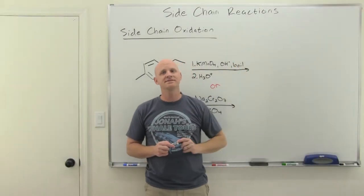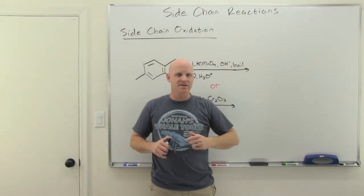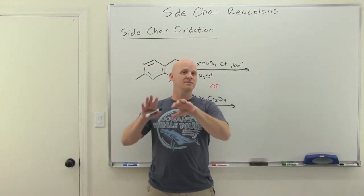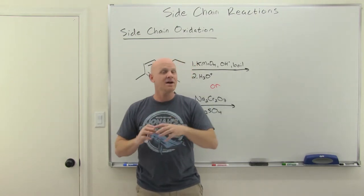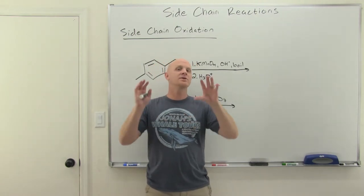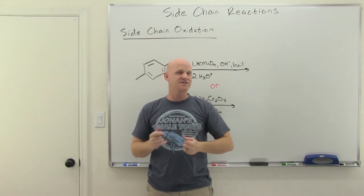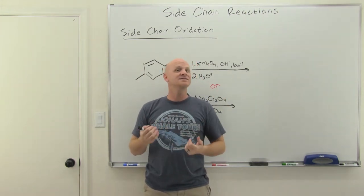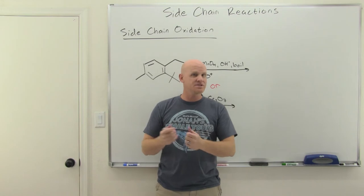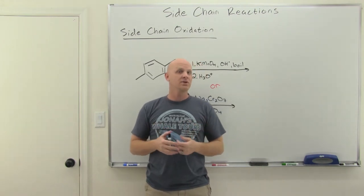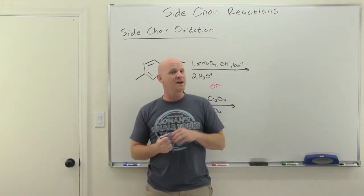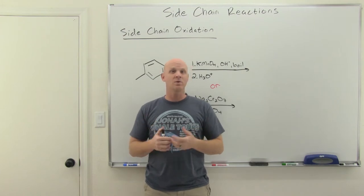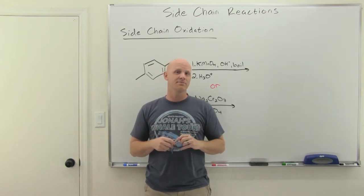Side-chain reactions of benzene is going to be the topic of this lesson. In the last lesson we went through reduction of the pi electrons in the benzene ring itself, but in this one we're going to focus on things attached — substituents attached to the benzene ring. We'll talk about side-chain oxidations and side-chain reductions for different substituents. We'll also remind ourselves about benzylic bromination and putting a good leaving group on that benzylic carbon and what that opens up for us.